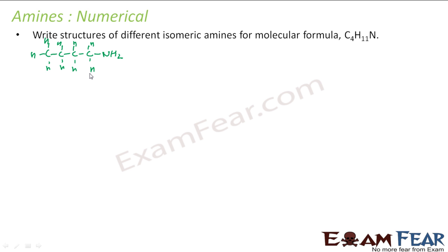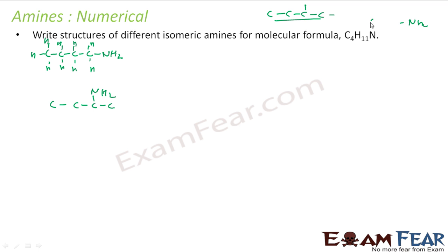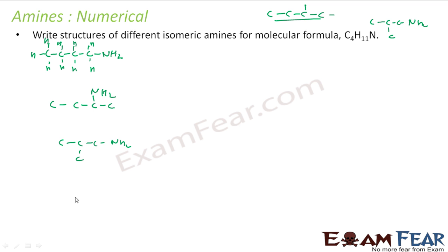The next structure: instead of having the amine at the last position, I can have it at a different carbon position. Let me draw it without showing hydrogens — this is one structure where the NH2 is at a different carbon. Another possibility is to have the NH2 group attached on a branched carbon. I can also draw something like this — another branched possibility.